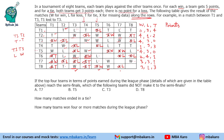Now counting points: a loss gives 0, a win gives 5, and a tie gives 3. Team 1: 4×3 = 12 points. Team 2: 20+6 = 26 points. Team 3: 20 points. Team 4: 5+9 = 14 points. Team 5: 20 points. Team 6: 10+3 = 13 points. Team 7: 15+3 = 18 points. Team 8: 15+9 = 24 points.